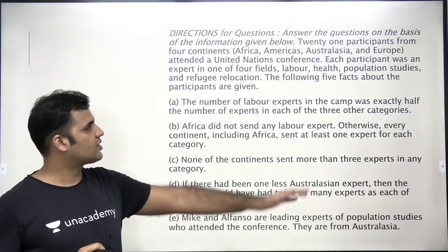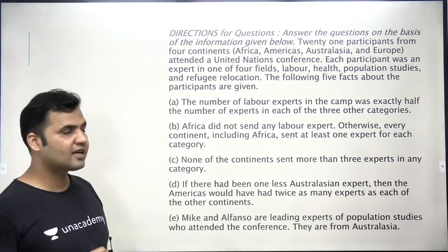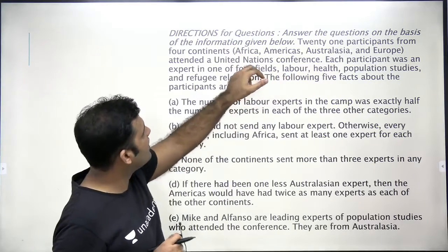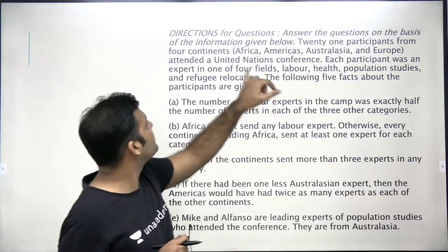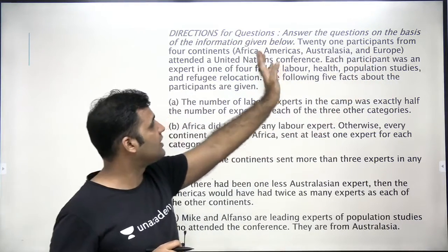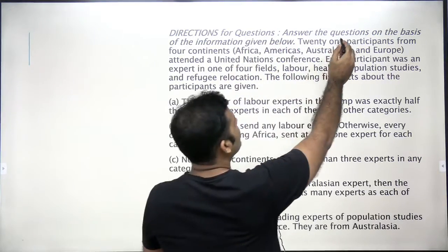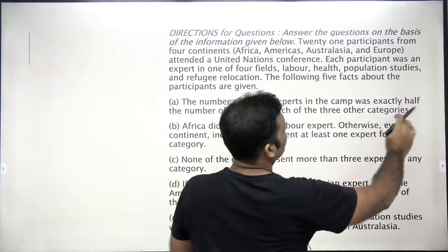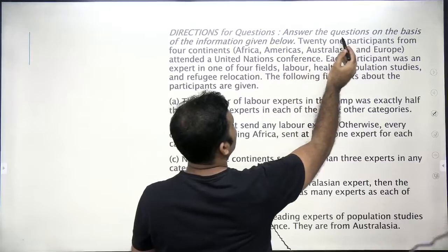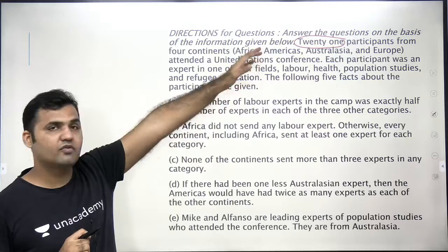The information is not much — only five to six conditions are given here. Let's first understand what the set is saying: 21 participants from four continents — Africa, America, Australia, and Europe — are attending a United Nations conference. The number of participants is 21, so just underline it. These are important numbers you need to underline, otherwise you will forget to use them.